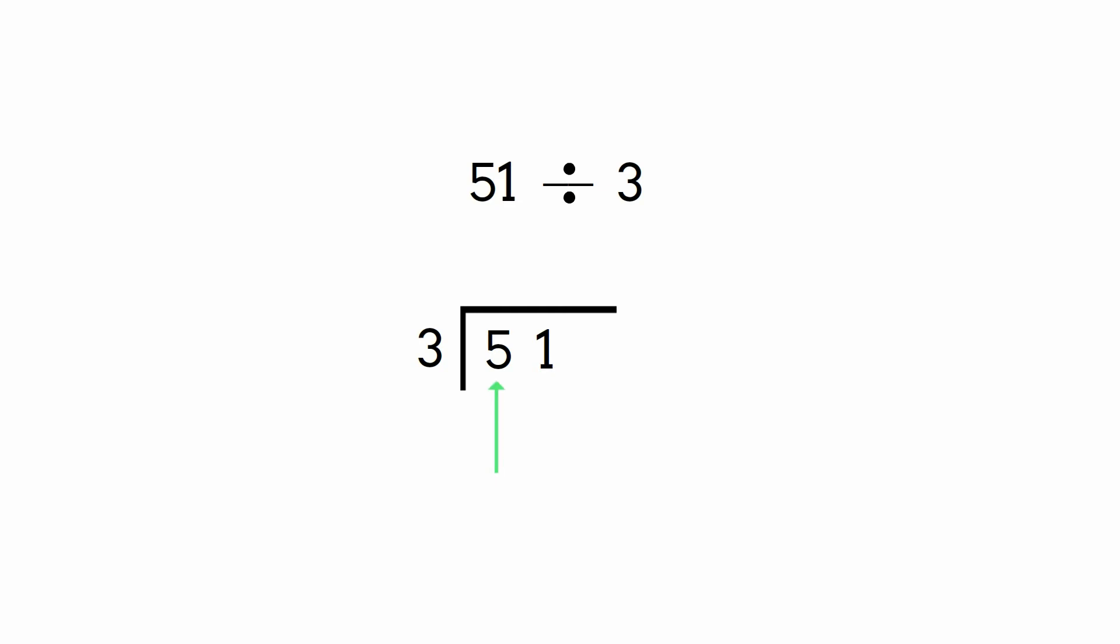Can 3 go into 5? Yes. How many times? One time, remainder 2. Now we're left with 21. How many times does 3 go into 21? 7 times. And there are no remainders, so we finished the division.